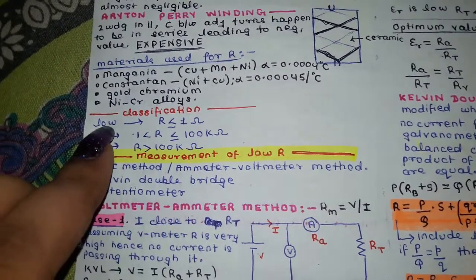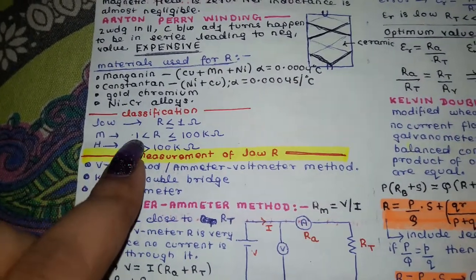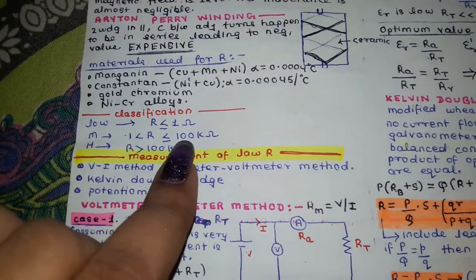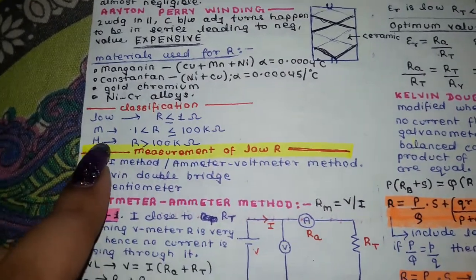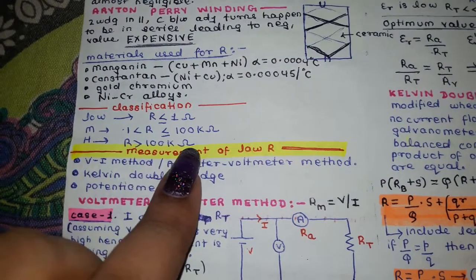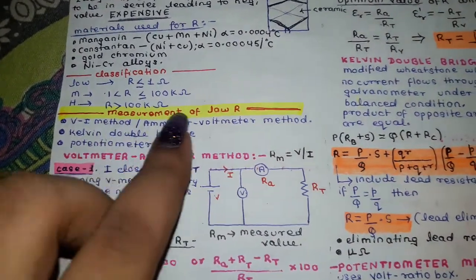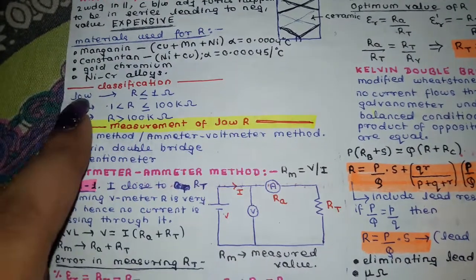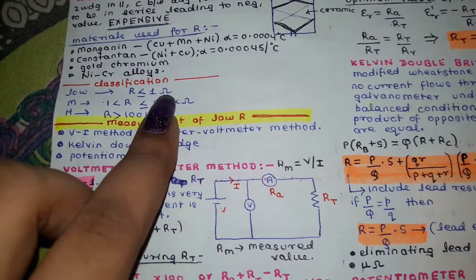Classifications of resistance: low resistance is anything less than or equal to one ohm; medium resistance ranges from one ohm to 100 kilo-ohms; and high resistance is anything greater than 100 kilo-ohms. We will now study how to measure low resistance.